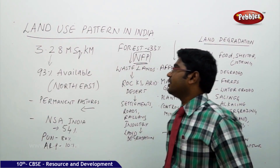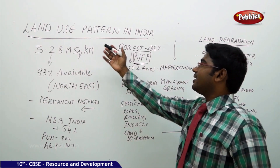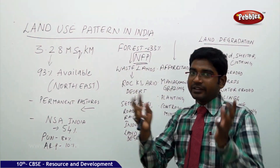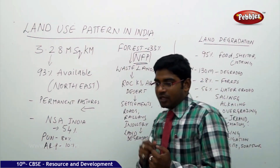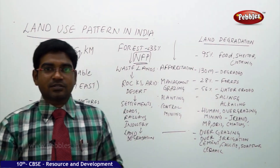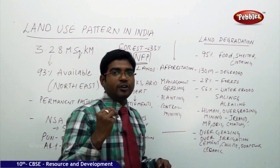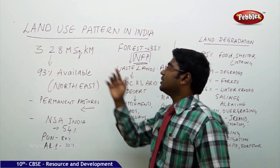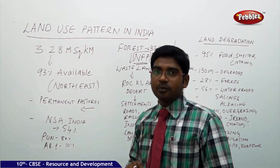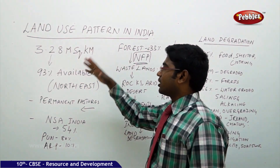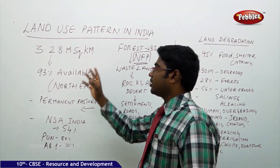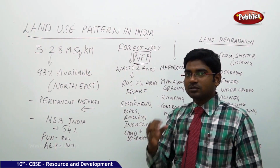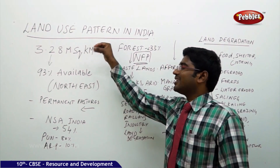Let us try to understand how the land use pattern is in India. India stands in seventh place according to its area. The land area of India is 3.28 million square kilometers — that is the entire geographical area which India holds.